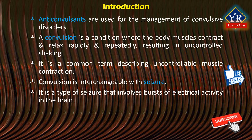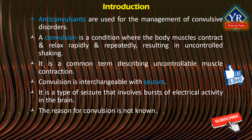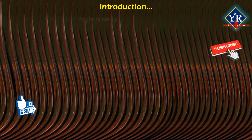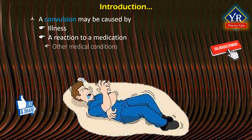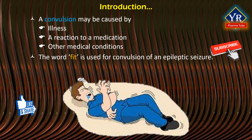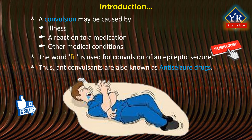Convulsion is a type of seizure that involves bursts of electrical activity in the brain. Occasionally, the reason for the convulsion is not known. A convulsion may be caused by illness, a reaction to a medication, or other medical conditions. Sometimes the word fit is used for a convulsion or an epileptic seizure. Thus, anticonvulsants are also known as anti-seizure drugs.